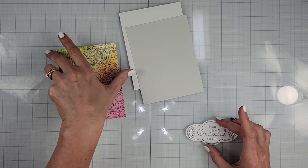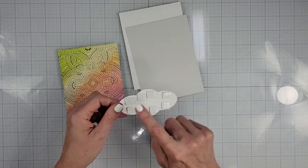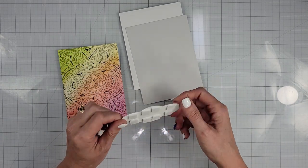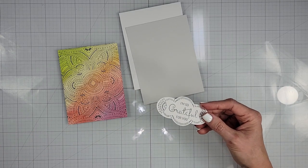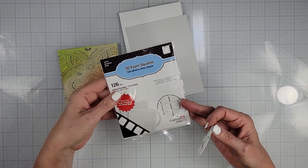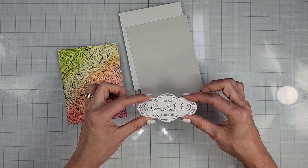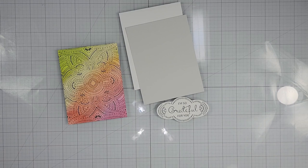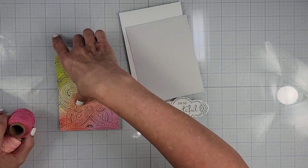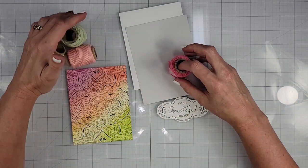And then I've already put some foam squares. I like to use these from scrapbook adhesives, but Simon Says Stamp has some really great ones too. So I have this already and I want to do a little bit of twine on there.